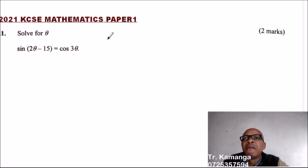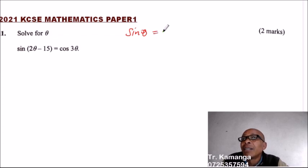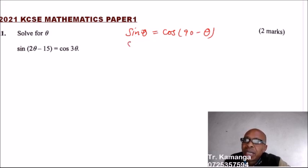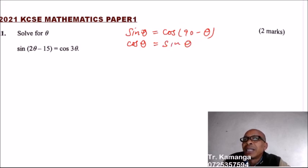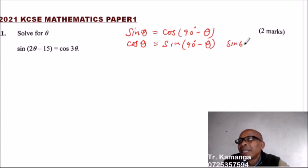Question number 11: sine of (2θ − 15) equals cos 3θ. To solve this, the key knowledge you need is that sin θ equals cos(90 − θ) — these are called complementary angles. Conversely, cos θ equals sin(90 − θ). For example, sin 60 is the same as cos 30, and you can confirm that with your calculator.